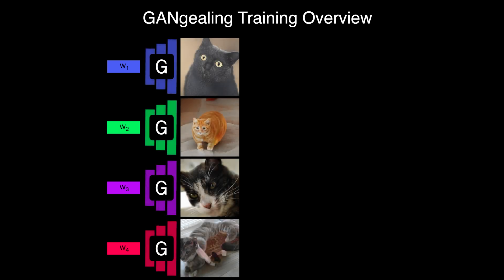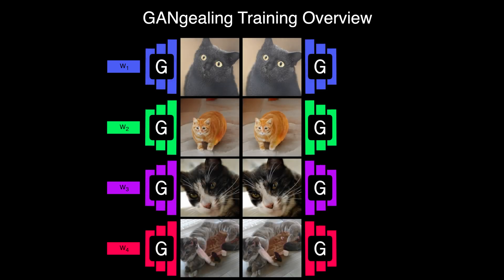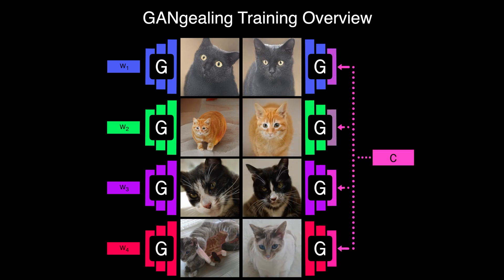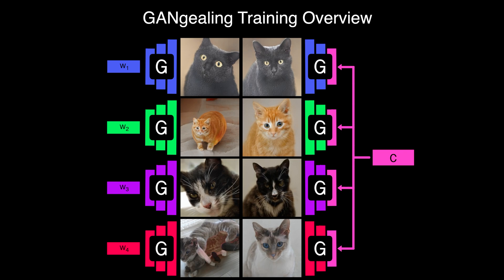At a high level, we build a paired dataset to train our spatial transformer network. The input image in each pair is drawn from a GAN pre-trained on the unaligned input distribution. The targets in each pair are formed by gradually interpolating just a portion of the input latent code towards our learned target vector, which roughly controls pose. This leads to target images that retain the appearance of the input but are rendered in the current template mode. Critically, these targets are learned jointly with the STN, end-to-end.